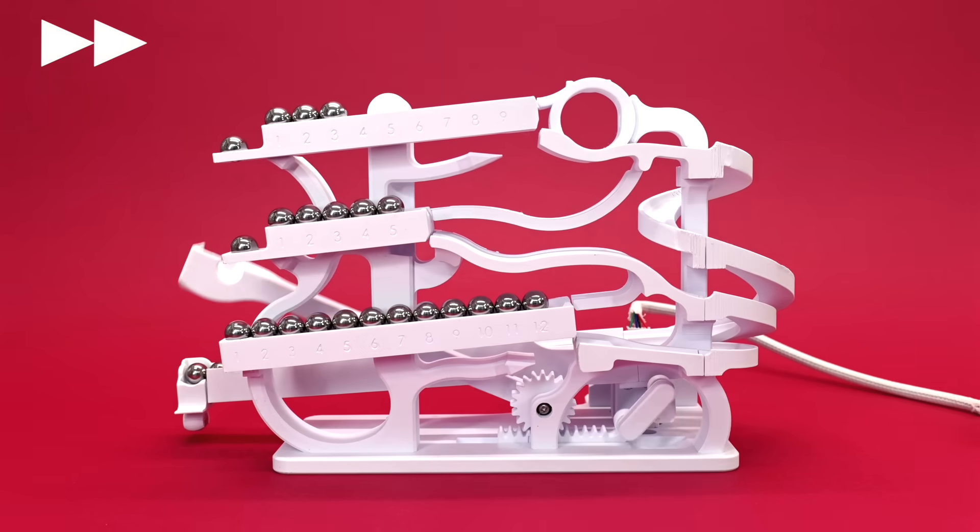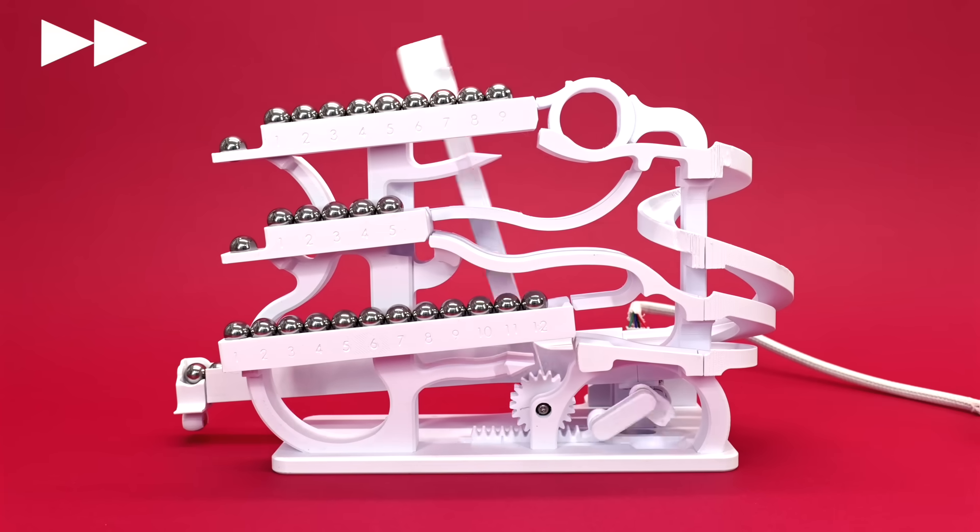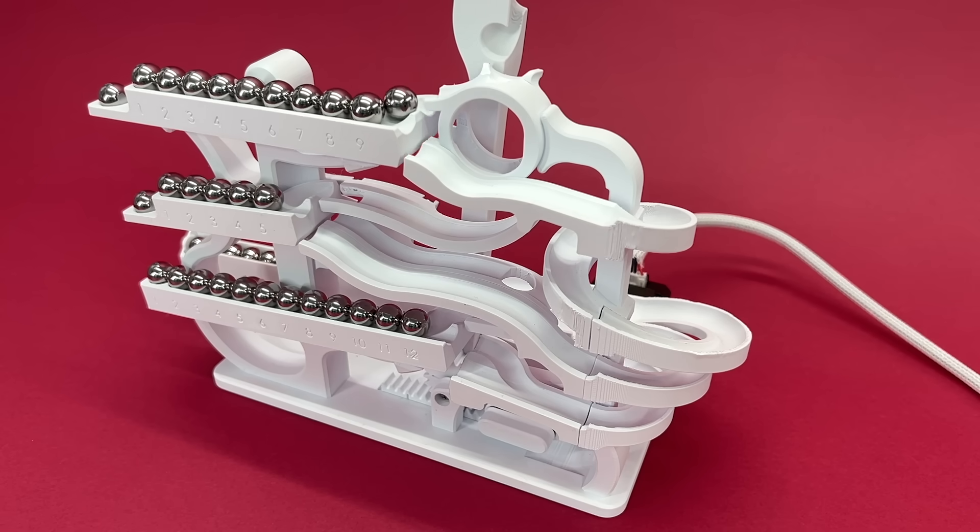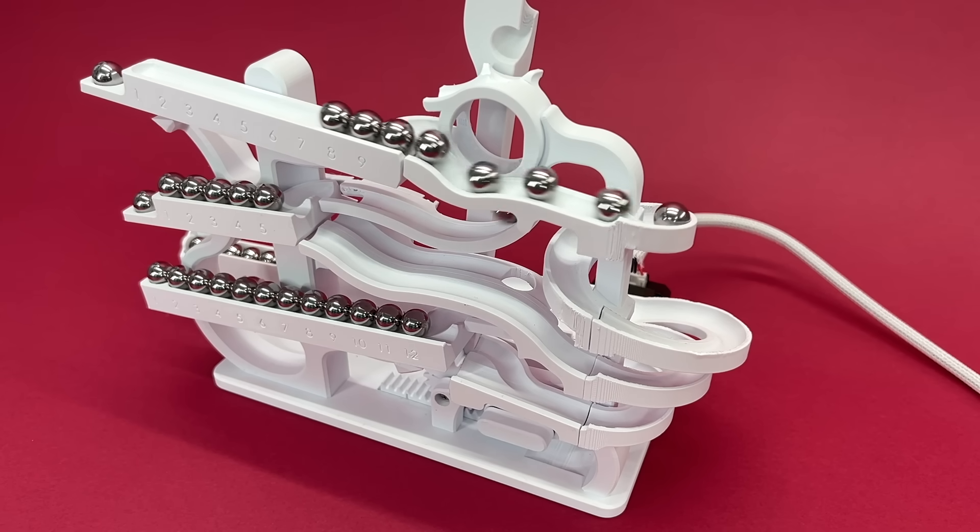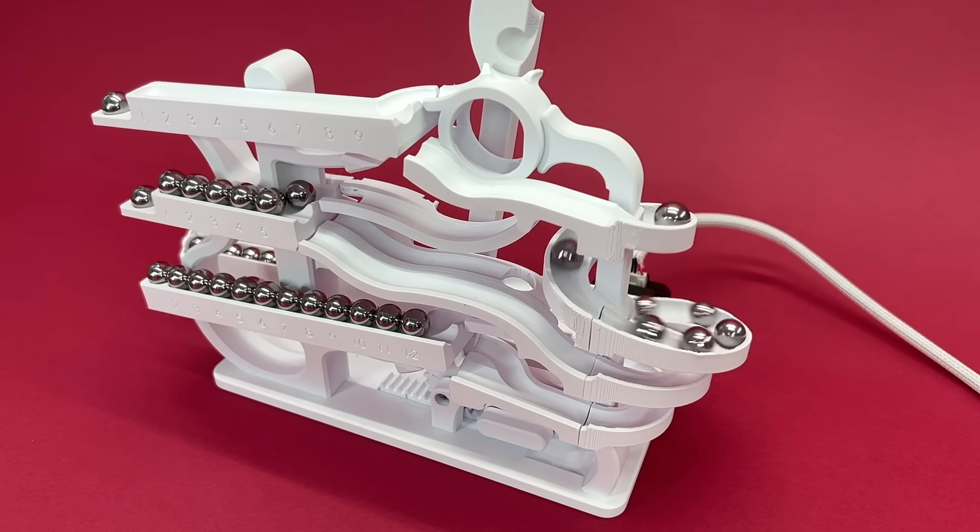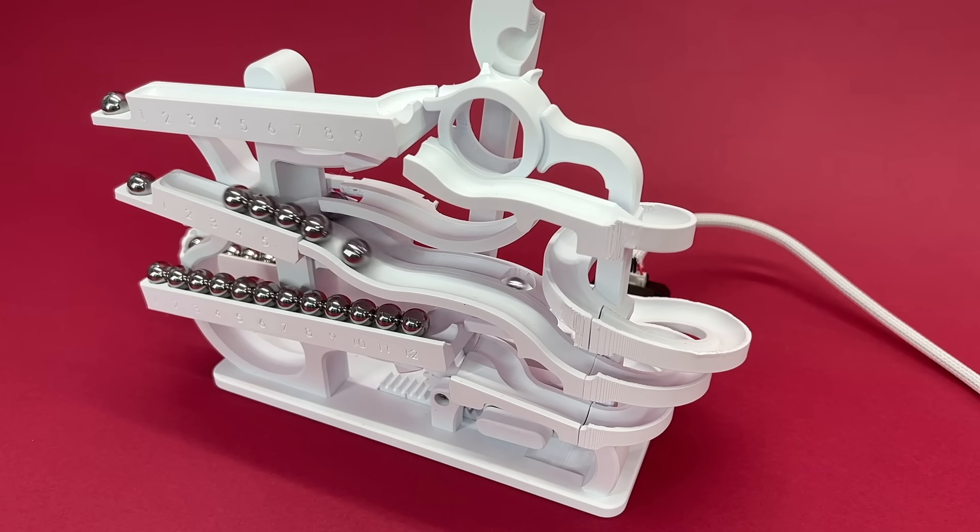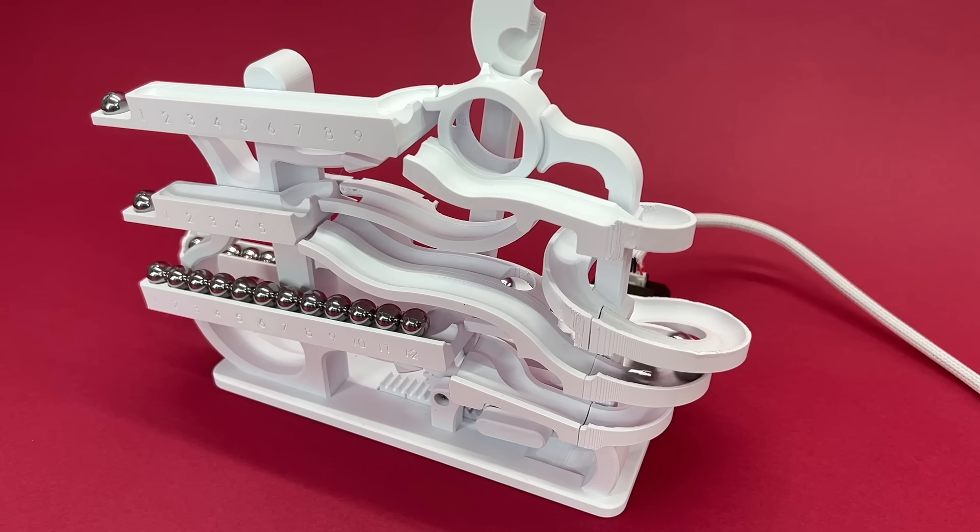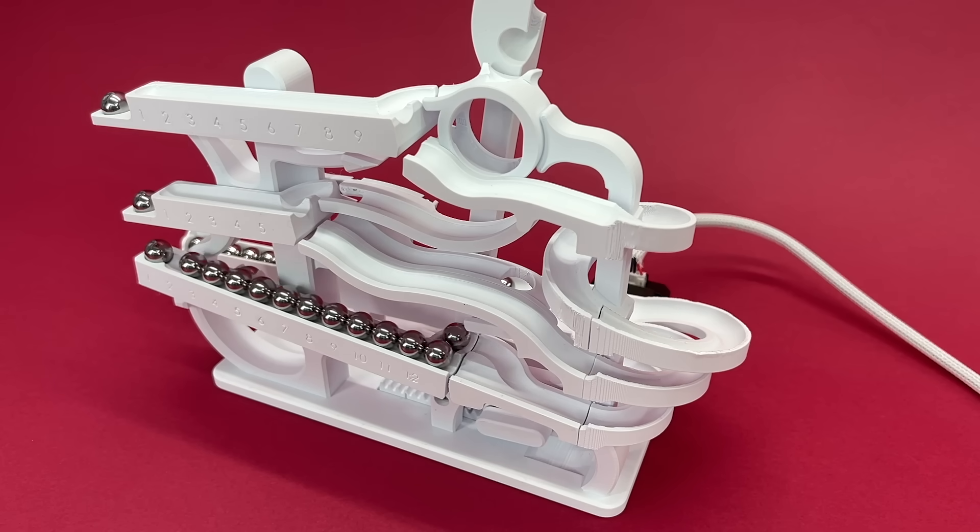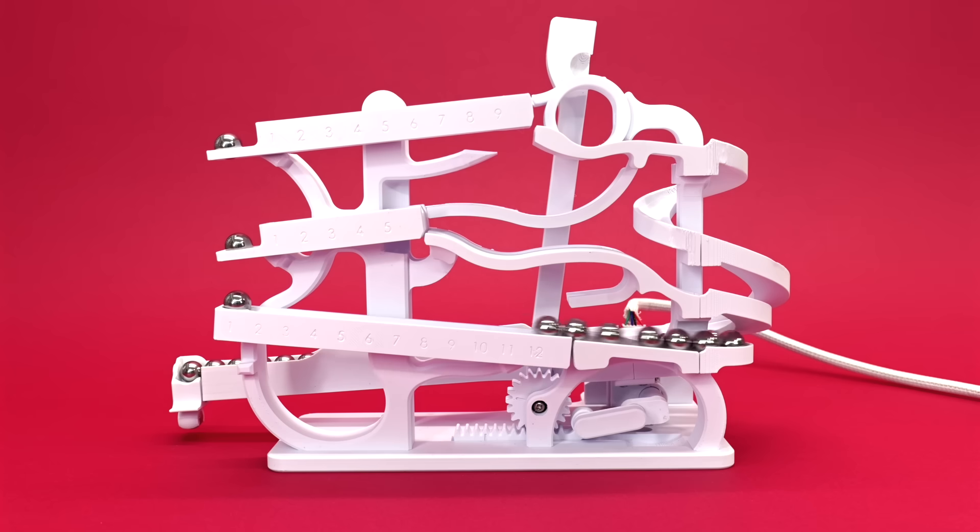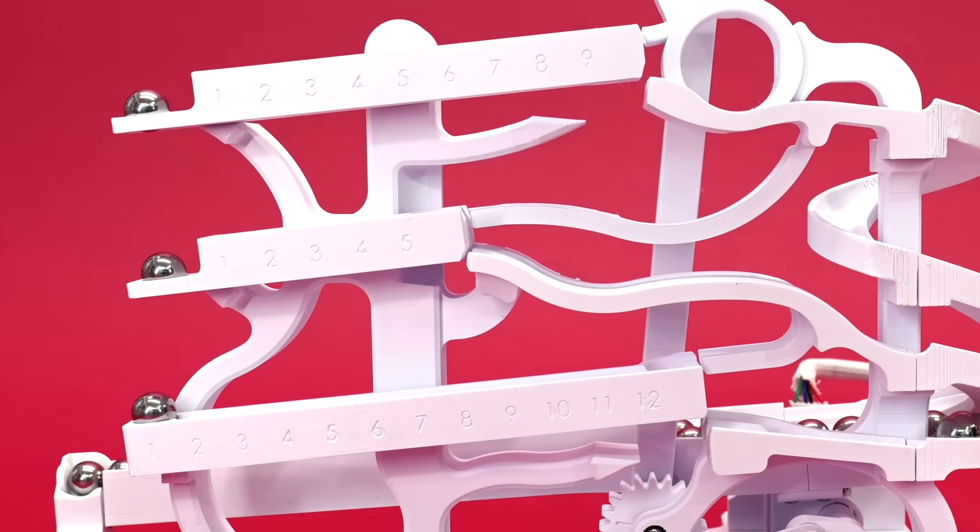Fast forward nine more minutes, and once again, the next ball causes the whole top seesaw to tip, but as the ball starting the commotion falls to the 10-minute segment, it causes that one to tip. Instead of following its buddies down the spiral, it takes the secondary track down to the hour seesaw, and causes that to tip as well, clearing it out. The time is now 1 o'clock.